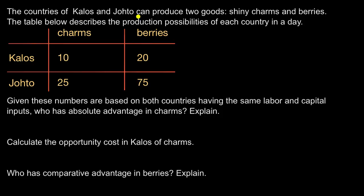The countries of Kalos and Johto can produce two goods: shiny charms and berries. The table below describes the production possibilities of each country in a day.